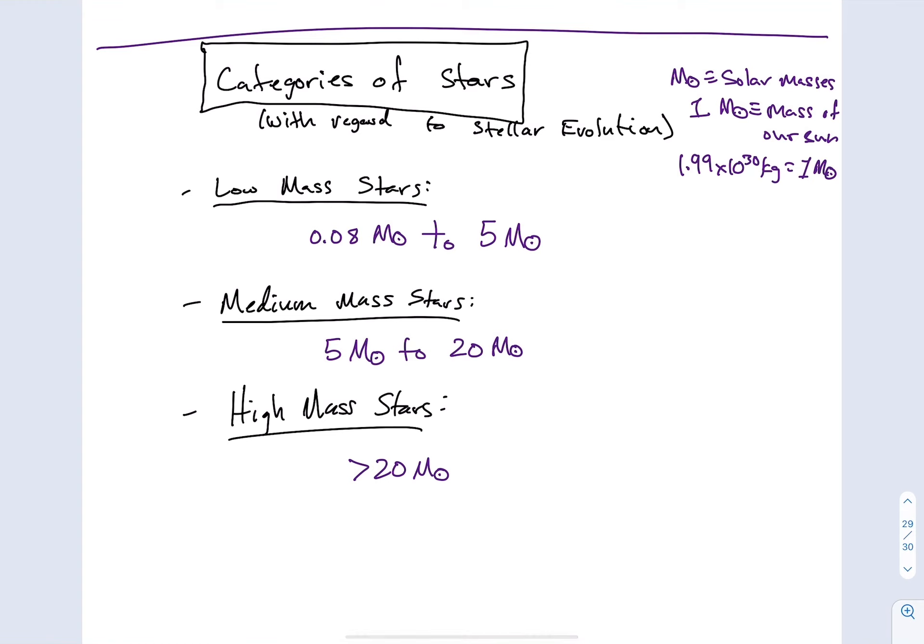Medium mass stars pick up from there. They go from five solar masses to 20 solar masses and anything greater than 20 solar masses. We will classify as a high mass star. We give you these categories because the mass classification of a star dictates usually the lifespan of that star that oftentimes the color of that star and how that star will go about living and dying. So the mass of a star tells us quite a lot.